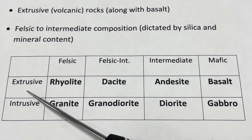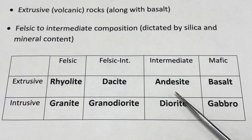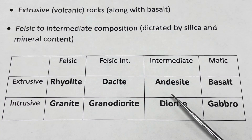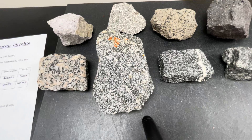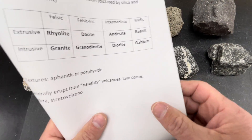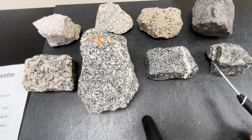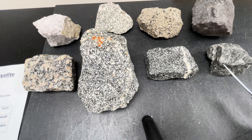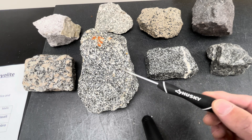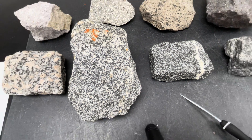A rock might have vesicles, which are gas bubbles frozen in the rock. Rhyolite, dacite, and andesite are what we're focusing on today. I've got the same four intrusive rocks — granite, granodiorite, diorite, gabbro — laid out here, and you can see the overall increase in mafic minerals getting darker left to right. The crystals are big enough to see and interlocking, telling us we have a phaneritic texture.